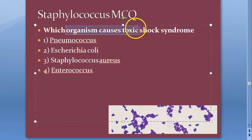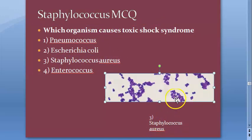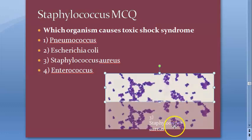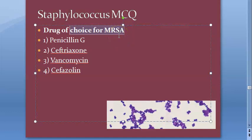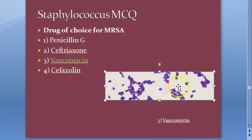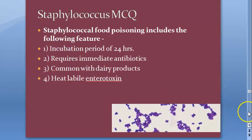Which organism causes toxic shock syndrome? Staphylococcus aureus — that is the answer. Drug of choice for MRSA, methicillin-resistant staphylococcus aureus, is vancomycin. Look at the answer here.